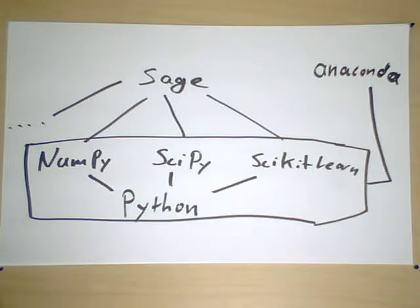Moreover, the computer algebra system SAGE is built on top of Python, and it is a great open source alternative to Maple and Mathematica.